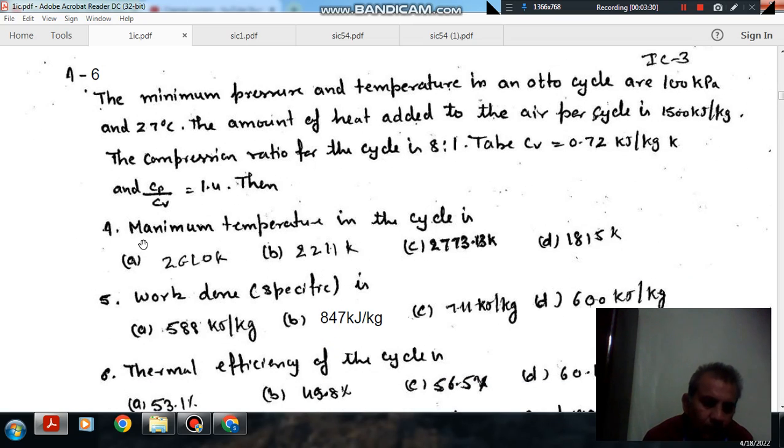Question 4: The maximum temperature in the cycle is, option A: 2610 K, option B: 2211 K, option C: 2773.13 K, option D: 1815 K.